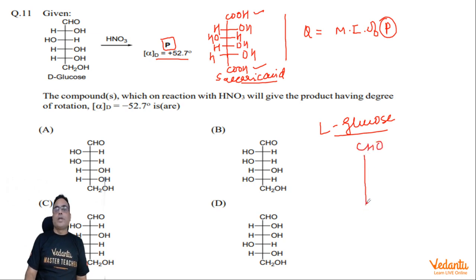You can see this is 1, 2, 3, 4. D-glucose has the direction right, left, right, right. So the mirror image will be left, right, left, left. Did you see that? This is a multi-correct answer question. L-glucose is one answer.